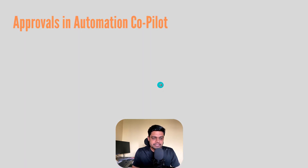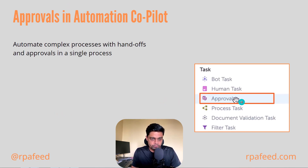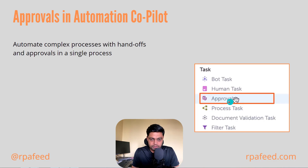Next is approvals. A new type of task is now available — known as approval tasks. Along with bot tasks and human tasks, you can use approval tasks as well in order to seek feedback or approval from a human user.